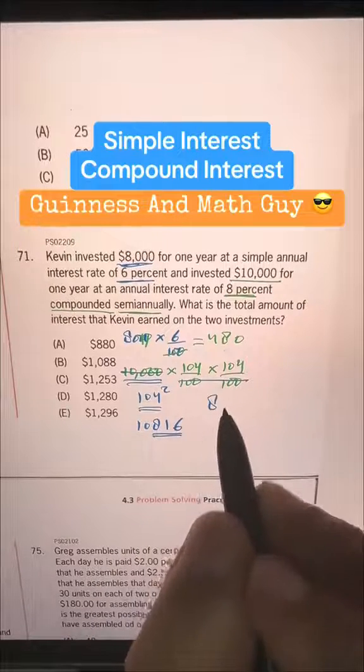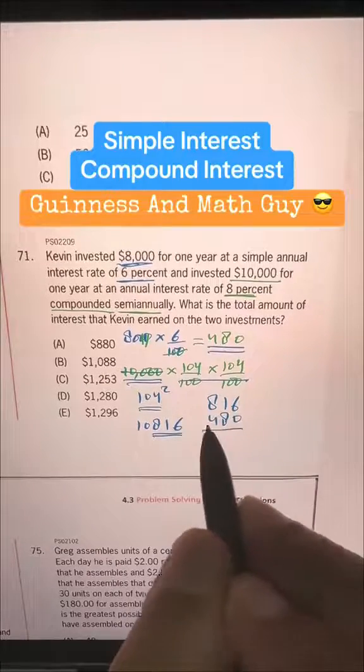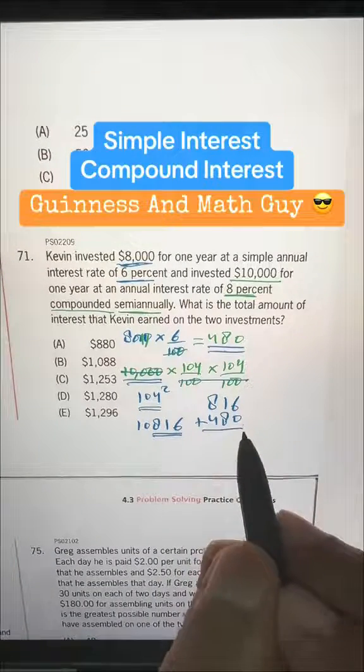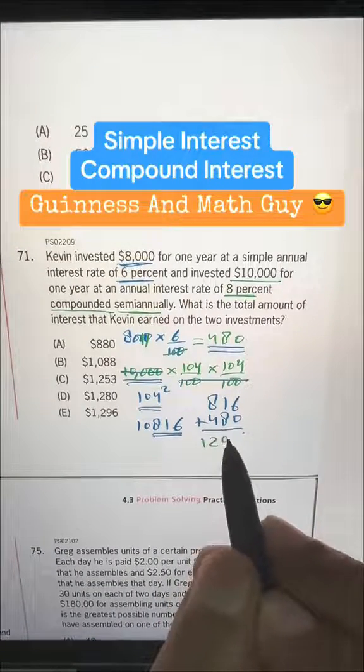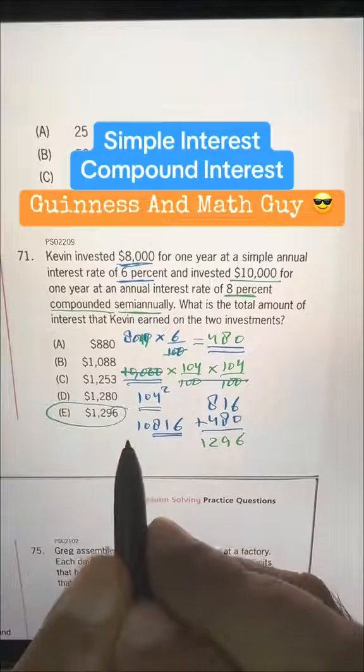We have 816 and we have 480. These are the two amounts of the interest. And this is 6. Let's do from here. It's easier. So 1,296 is our answer choice E.